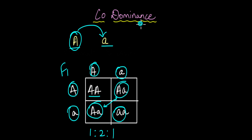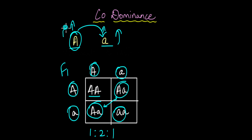But in the case of codominance, neither allele is fully dominant over the other, which means that even the recessive phenotype is expressed, as is the dominant phenotype. Especially in heterozygous individuals where there is both the dominant and recessive allele, both traits are expressed along with each other — in other words, both are dominant.